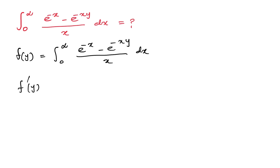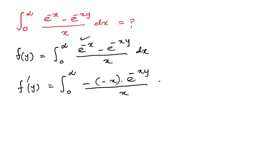Then, the next step is to differentiate with respect to y. So f'(y) is equal to the integral from 0 to infinity. We know the first term is constant, so we differentiate the second term: minus x times e^(-xy) over x, dx.